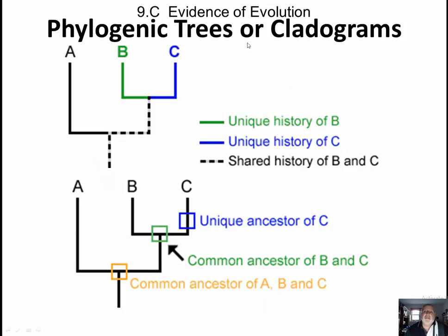The diagram shows relationships of different species over time: common ancestor, speciation events, and most closely related based on shorter branch length. This is talking about shared history for B and C — B and C are more closely related. We have a common ancestor of A, B, and C, a common ancestor of B and C, and a unique ancestor of C as it changes through time.